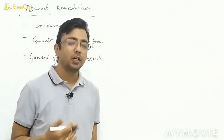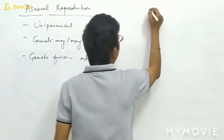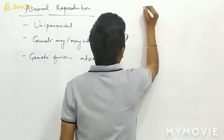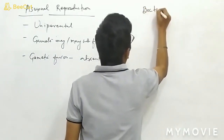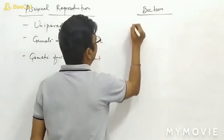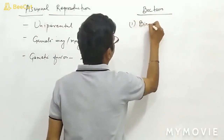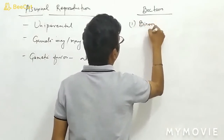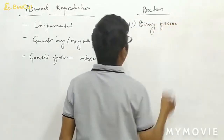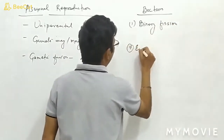But when we talk about bacterial asexual reproduction, there are two types. The first is binary fission, and the second is endospore formation.